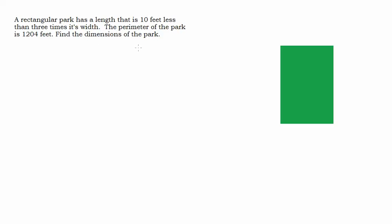Anytime you start a story problem, I always want to say, what is it that I'm trying to find? Find the dimensions of the park. That's the length and the width of the park. I don't know the length and the width. What do I know? I know the perimeter of the park is 1,204 feet. And I know that the length is 10 feet less than 3 times the width. So there are some things I know and I'm going to use those to help me write an equation.